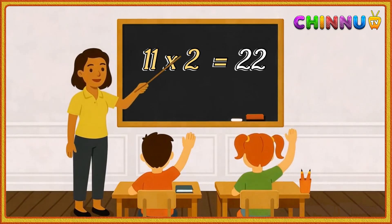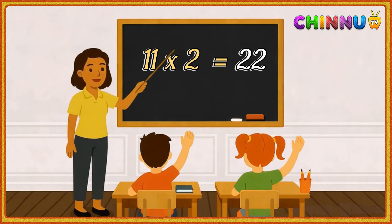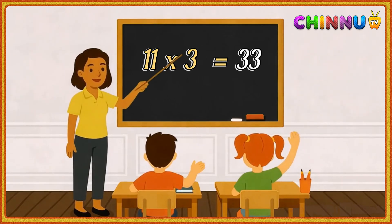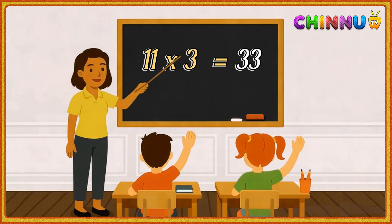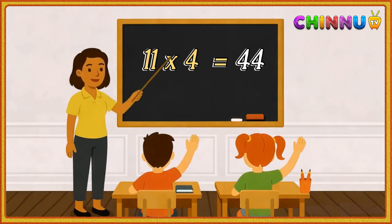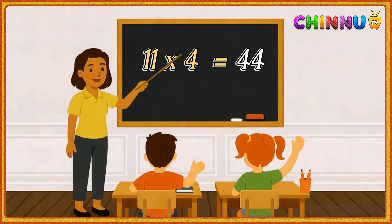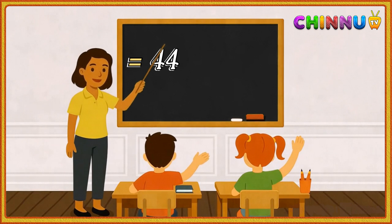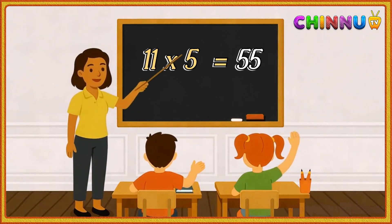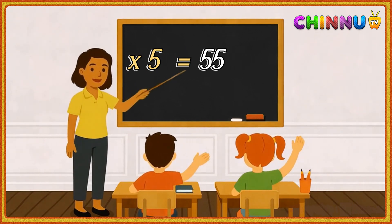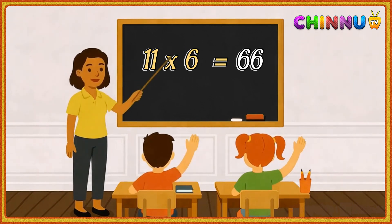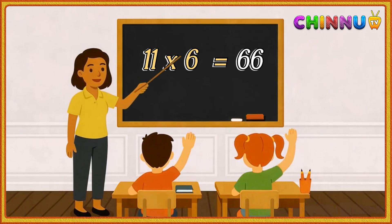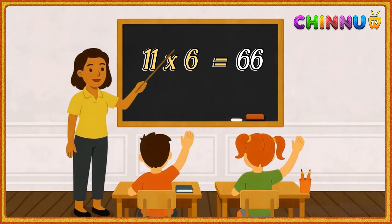11 twos are 22. 11 threes are 33. 11 fours are 44. 11 fives are 55.